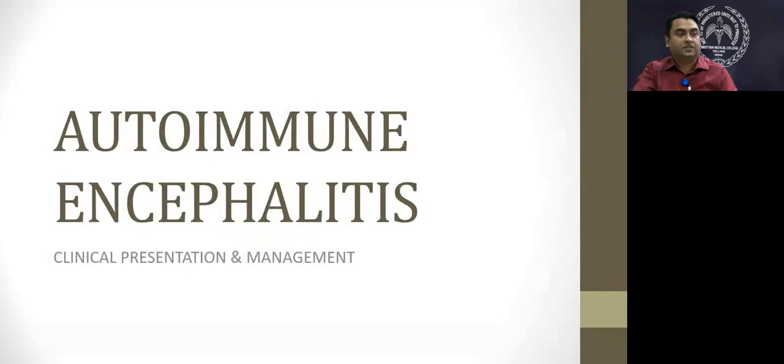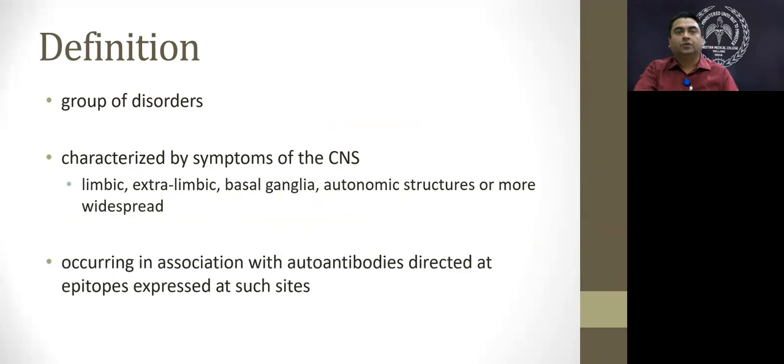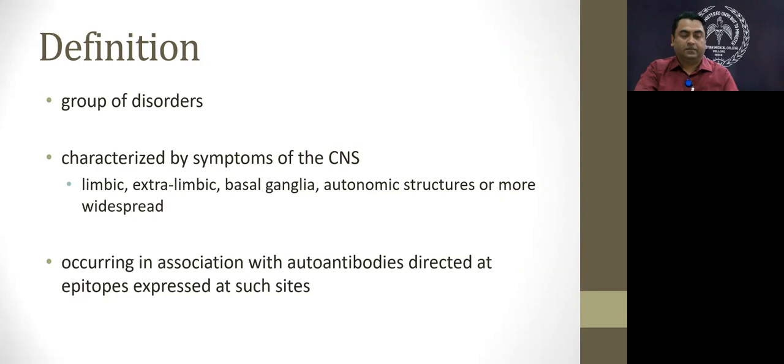Good evening everybody. I thank the Department of Medicine and Neurology for giving this chance to present the lecture on autoimmune encephalitis — mainly the clinical presentation and management. By definition, autoimmune encephalitis is a group of disorders with CNS symptoms localized to mostly limbic structures, or also extra-limbic, basal ganglia, autonomic structures, or any other brain site, occurring in association with autoantibodies directed at epitopes expressed at those involved sites.